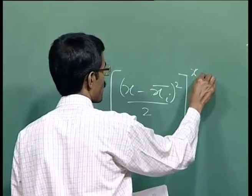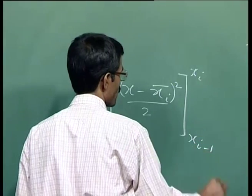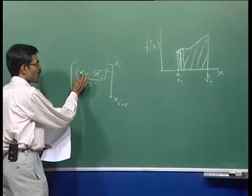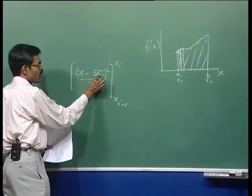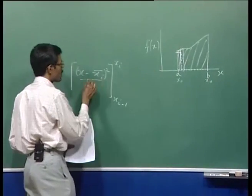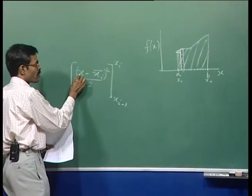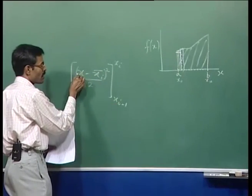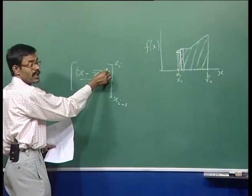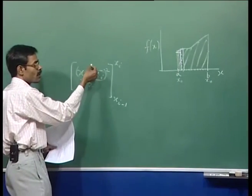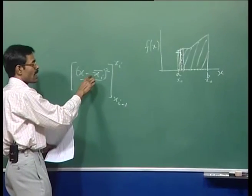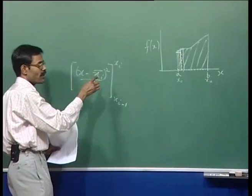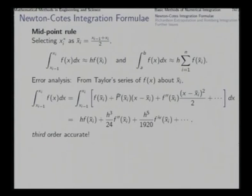Since x_i is h/2 away from the midpoint and x_{i-1} is minus h/2 from the midpoint, when we evaluate the square term at both endpoints and subtract, we get zero — because the linear term x minus x_i_bar is an odd function, and its integral from minus h/2 to h/2 is 0. So the h² term is absent from the error.